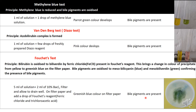To summarize, the three tests for bile pigments are the methylene blue test, van den Berg's test, and Fouchet's test.